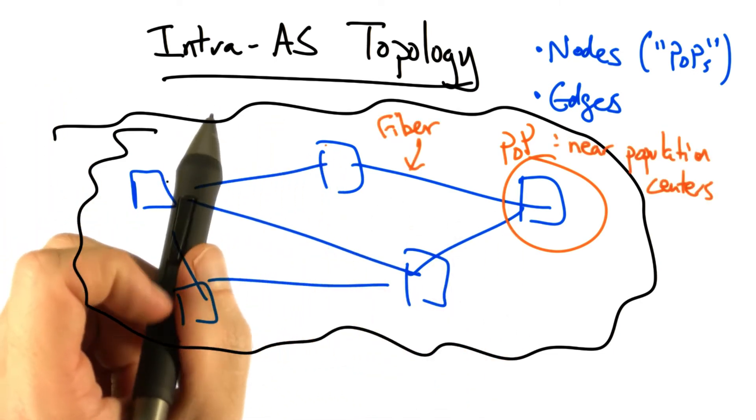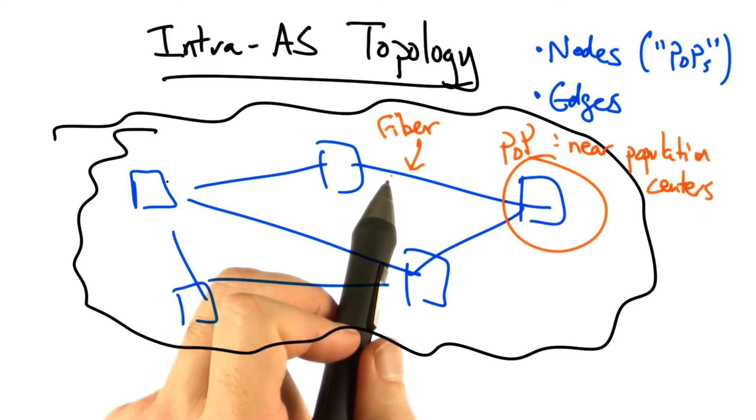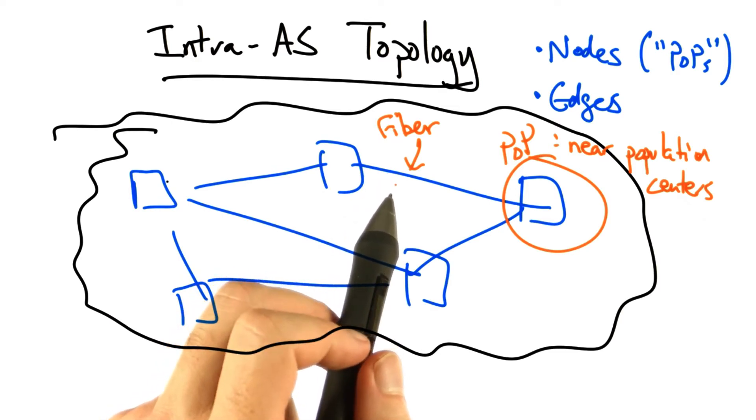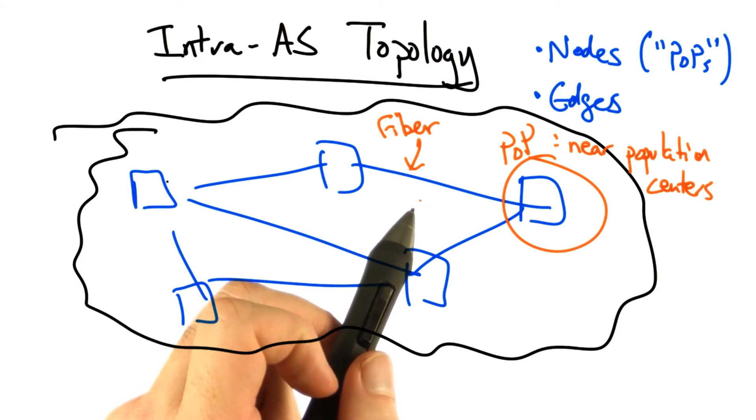The edges between POPs are typically constrained by the location of fiber paths, which, for the sake of convenience, typically parallel major transportation routes, such as railroads and highways.